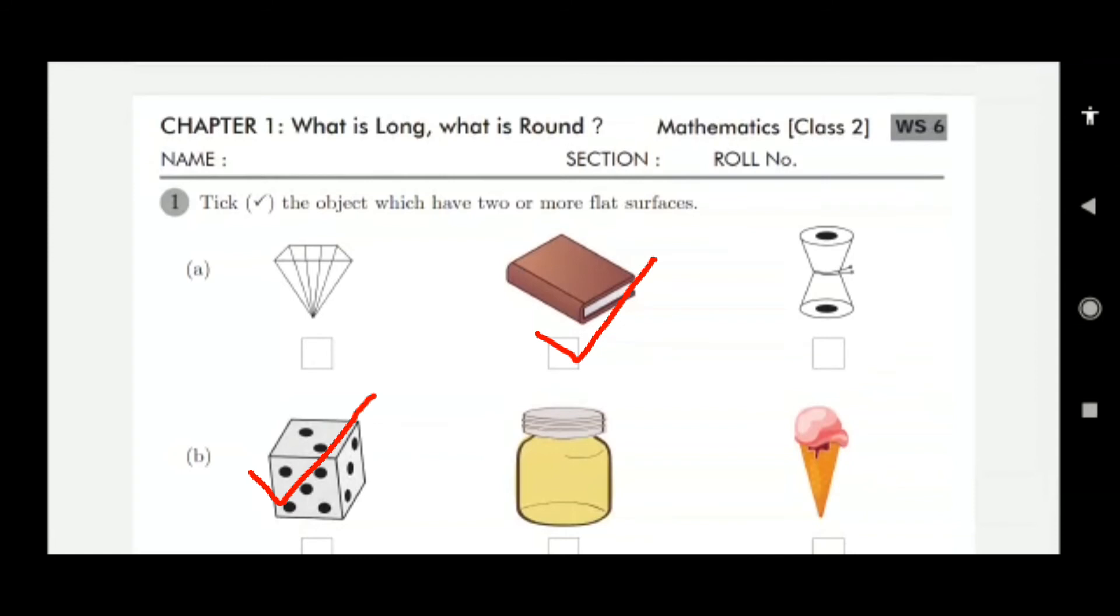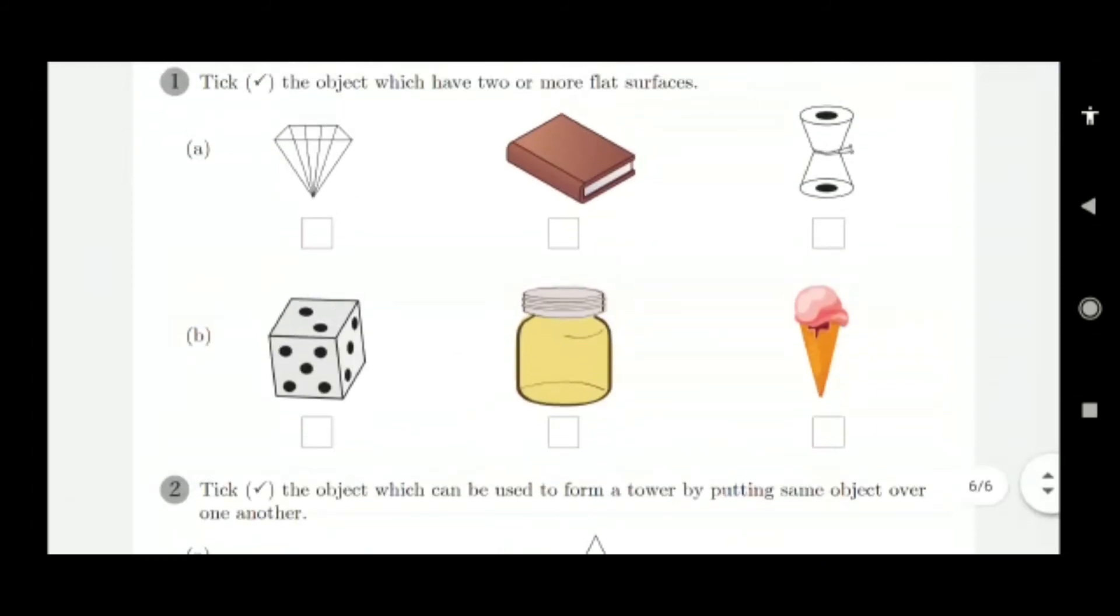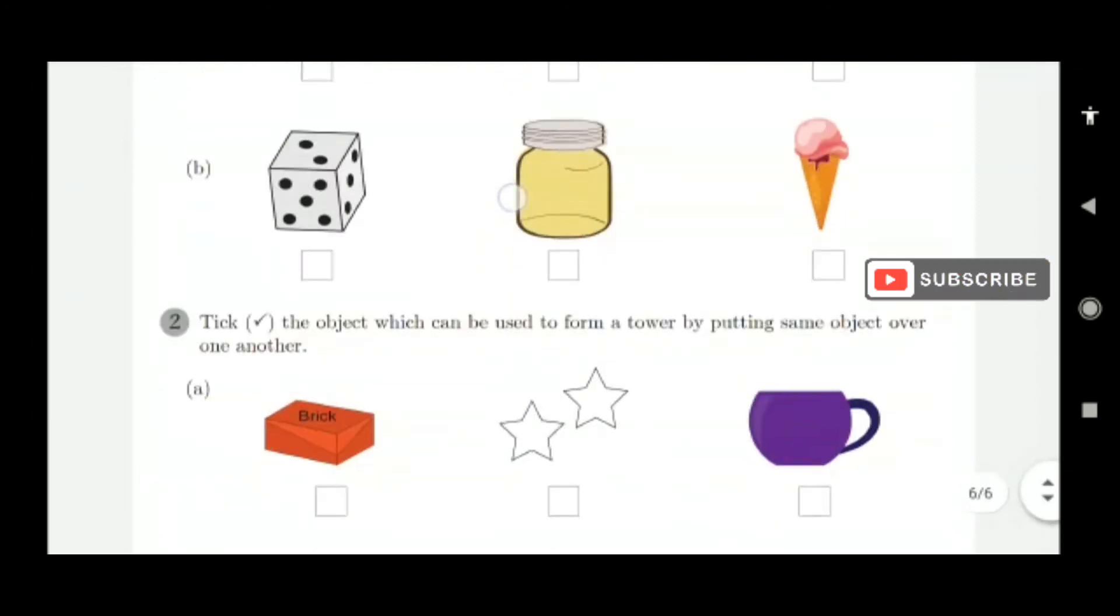Book, right? Flat surface. It has up, down, all 4 sides. Even this also, dice. Dice also, more than 1, 2, 3, 4, 5, 6, 8 surfaces.